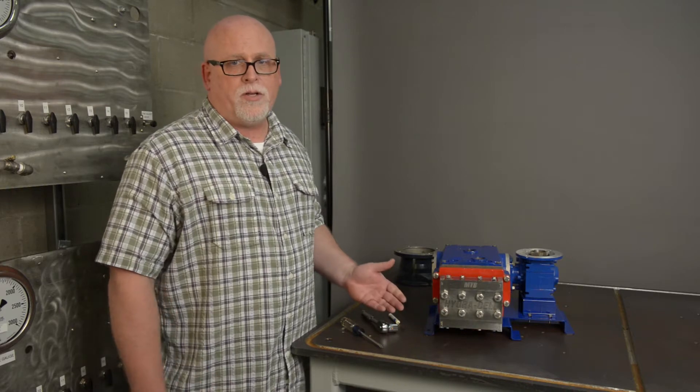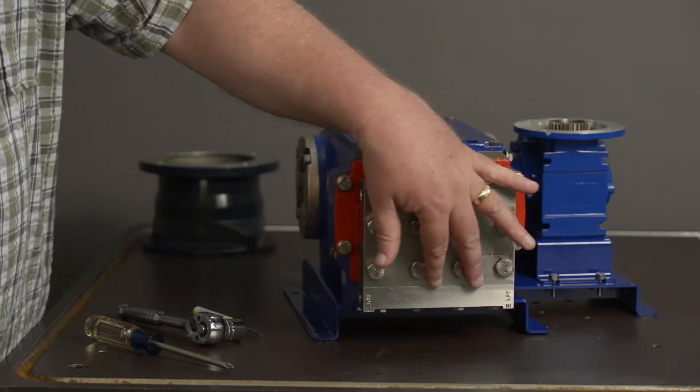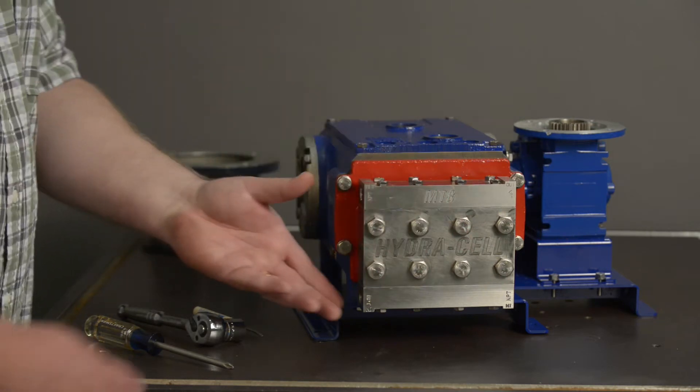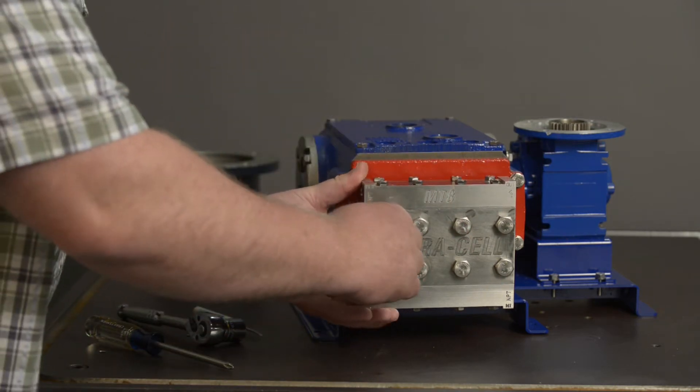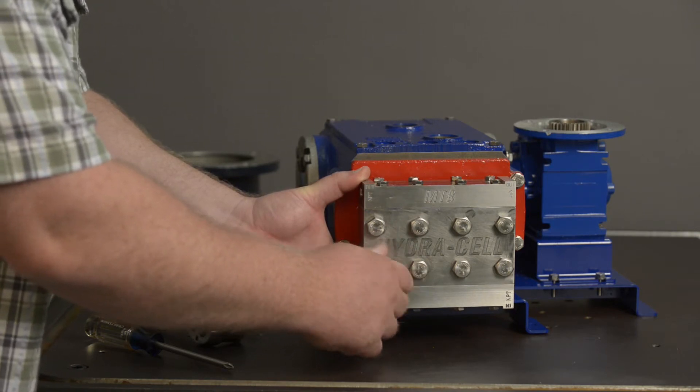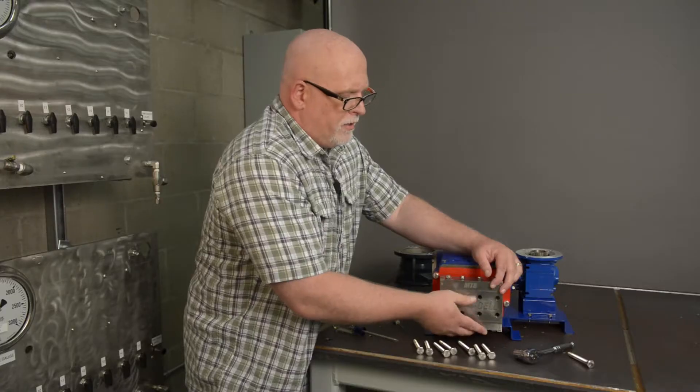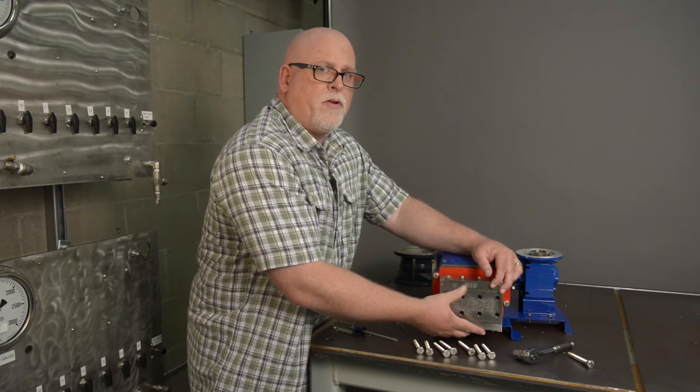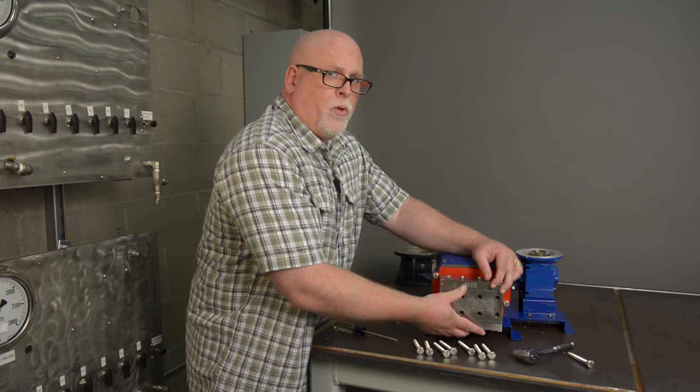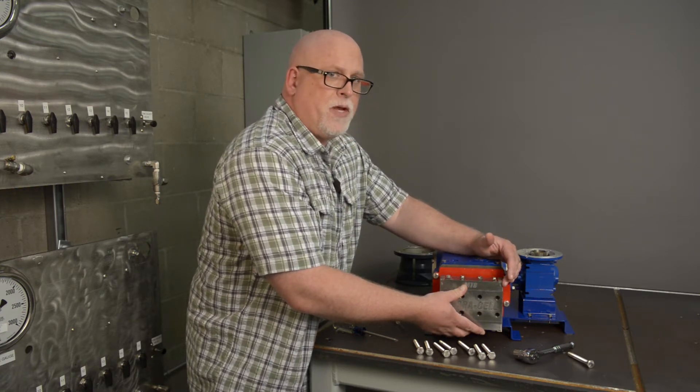The first thing that you're going to do is remove these eight large bolts on the front of the manifold. In the interest of time, I've removed all eight of the bolts from the front of the manifold and now this is free to be removed from the pump.